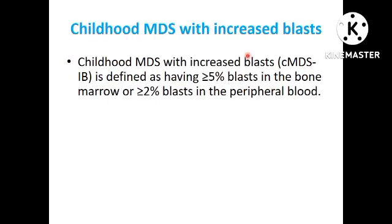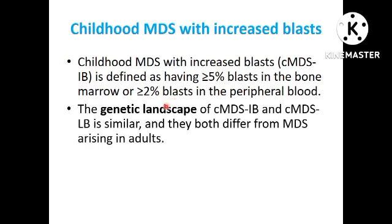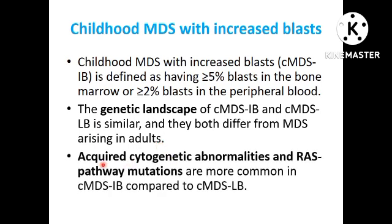For childhood MDS with increased blast, you need more than 5% blast in the marrow and more than 2% in peripheral blood. The genetic landscape of childhood MDS with low blast and childhood MDS with increased blast is similar to each other, but differs from adult MDS. In childhood MDS, acquired cytogenetic abnormalities and RAS pathway mutations are more common, whereas adult MDS features mutations in splicing factors and epigenetic regulators.